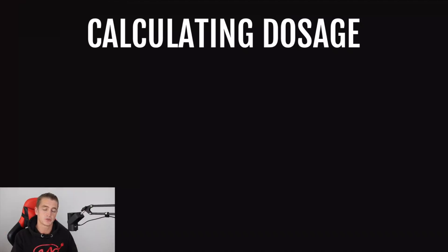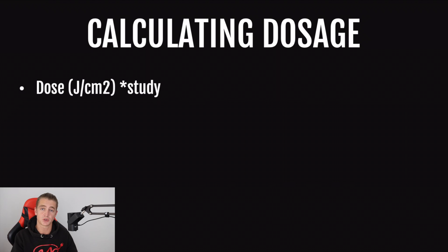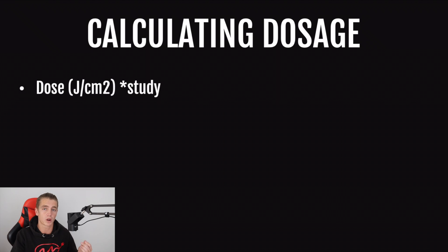So let's jump into how you would calculate dosage. You're going to need two specifications in order to do this calculation. The first one is the dose that they used in the study — that is a measurement of how much light energy was delivered, measured in joules per centimeter squared. You can find this in any study that used red light therapy for a specific benefit. In a high quality study, you should be able to find this metric somewhere in the methods, where they say they used a total dose of so many joules per centimeter squared.